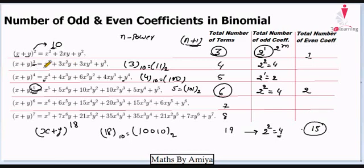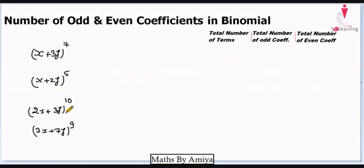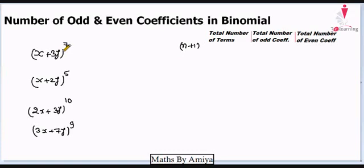Let's check for a few examples. We have four different binomials and we have to find total number of terms, total number of odd coefficients, and total number of even coefficients in the expansion of these four binomials. Total number of terms for any binomial is always n+1. If the power is 7 then 8; for 5 it's 6; for 10 it's 11; for 9 it's 10. For this, we have to check that both coefficients of x and y should be odd.